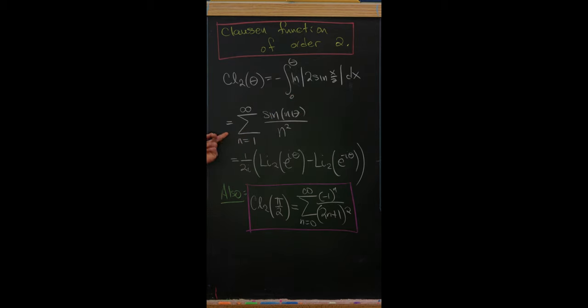We can expand it as a Fourier series as this sum. We've got this nice term sine n theta over n squared. It's also related to the dilogarithm which has been on the channel before.